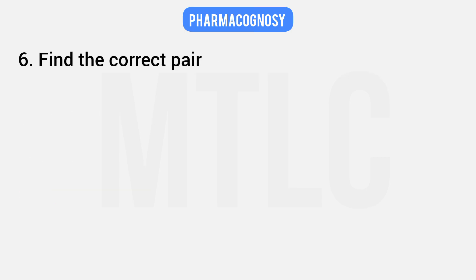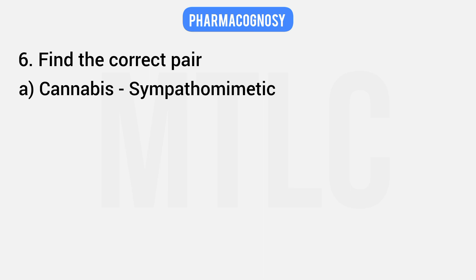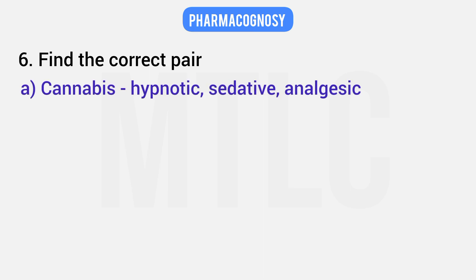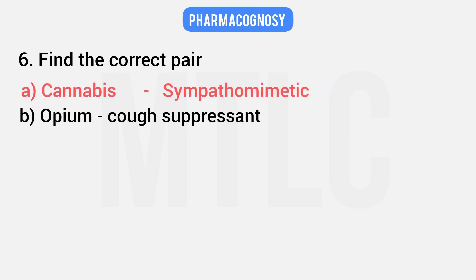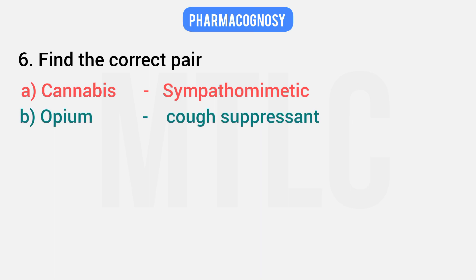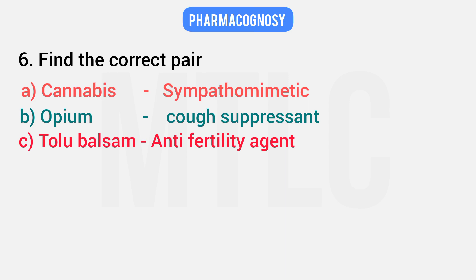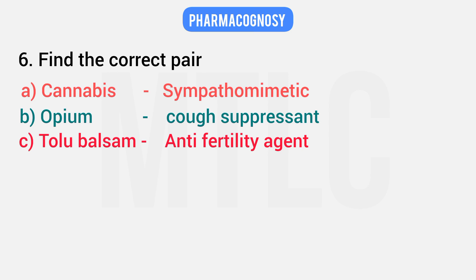Sixth question: find the correct pair. Of the four pairs, three are incorrect and one is correct. Cannabis is NOT a sympathomimetic — it is hypnotic, sedative, and analgesic. Opium IS a cough suppressant — so the correct answer is opium as cough suppressant. Tolu Balsam is not an anti-fertility agent; it is an expectorant and antiseptic. Rauwolfia is not an expectorant — it is a tranquilizer.